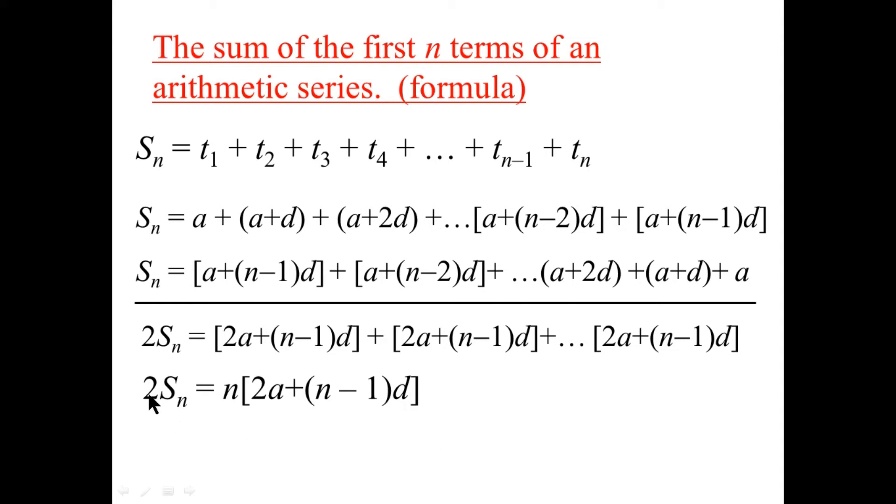And so all we need to do now is divide through by 2, and we'll have our new formula. Here it is. S sub N, the sum of an arithmetic series, is N over 2 times 2A plus N minus 1 times D. It has to be memorized. And now I've got five examples for you.